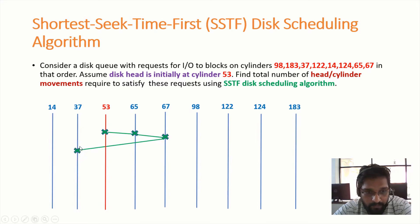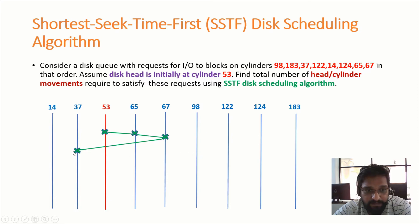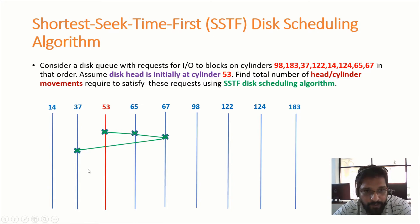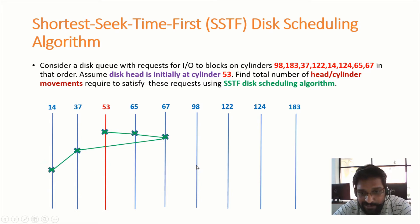From cylinder number 67, I need to identify whether cylinder number 14 or cylinder number 98 is nearer. Since cylinder number 37 is nearer to cylinder number 67, we need to move the disk head towards cylinder number 37. From cylinder number 37, since cylinder number 14 is nearer, we move the disk head towards cylinder number 14.